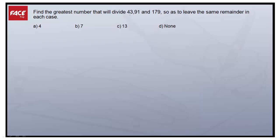Find the greatest number that will divide 43, 91, and 179 so as to leave the same remainder in each case. We know the concept: greatest number means it should always be HCF, so I have to find the HCF.